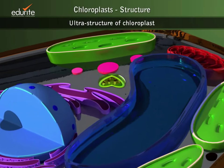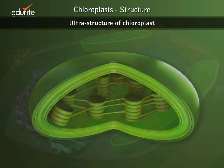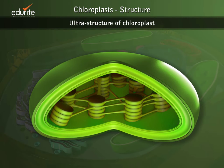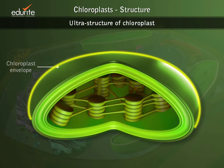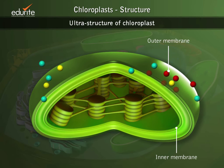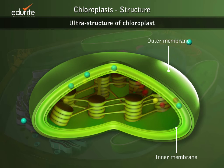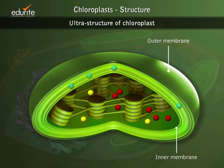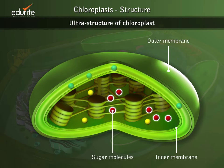Like most organelles in a eukaryotic cell, chloroplasts are surrounded by a bilayered membrane called the chloroplast envelope and are disc-shaped. While the outer membrane is freely permeable to molecules, the inner membrane is selectively permeable and contains many transporters such as integral membrane proteins, which regulate the passage of small molecules like sugars in and out of the chloroplast.